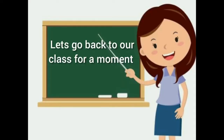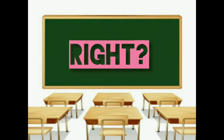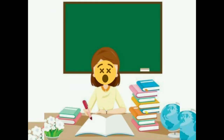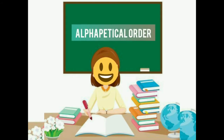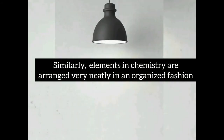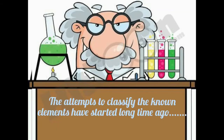Let's go back to our class for a moment. In our class there may be 30 to 40 students, and all of them have different names. So there are a lot of names for your teacher to remember. But how are your names arranged in your attendance register? Obviously, it will be in alphabetical order. Similarly, elements in chemistry are arranged very neatly in an organized fashion in a very special and important table. Attempts to classify the known elements started a long time ago.